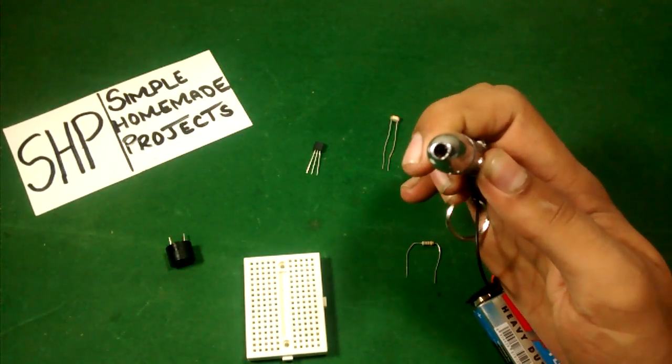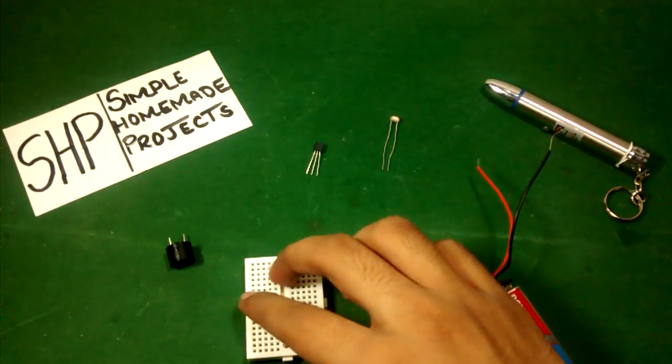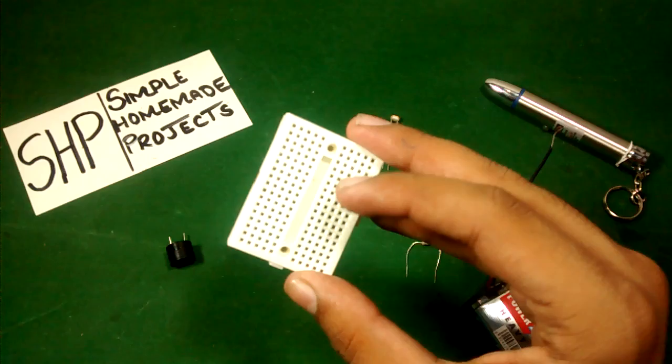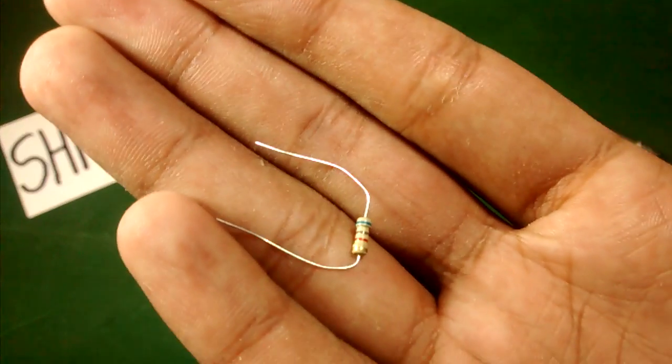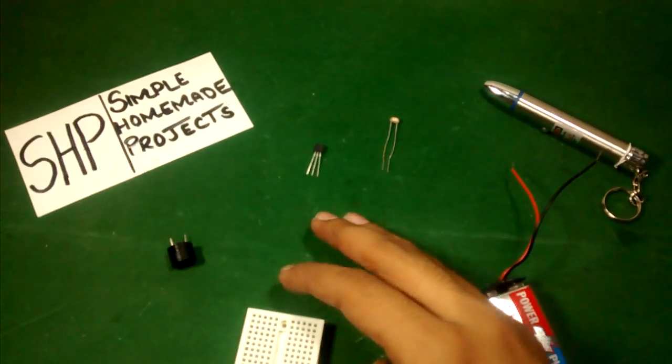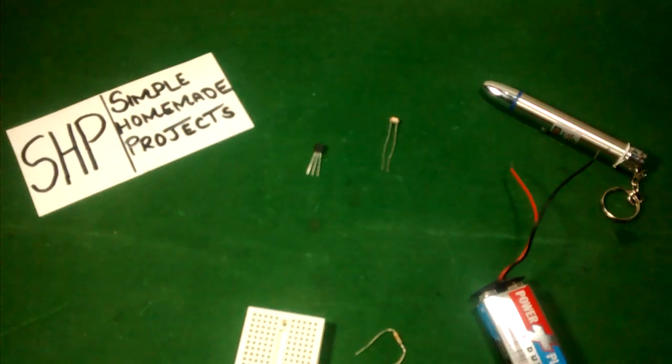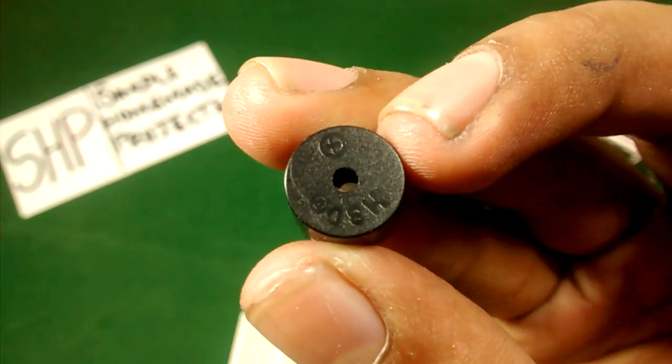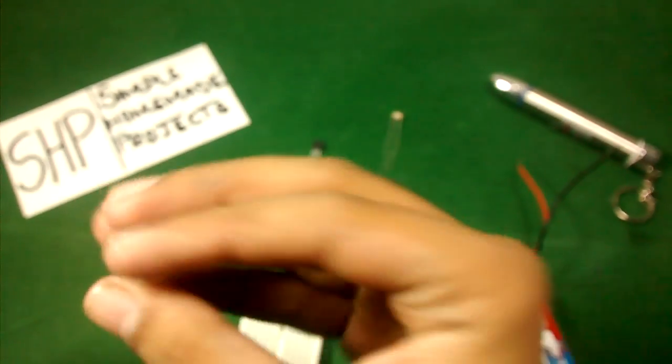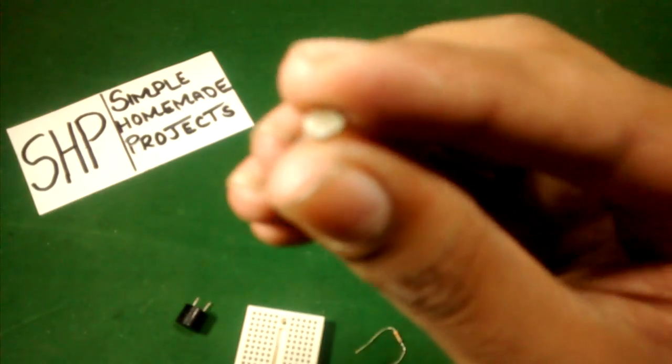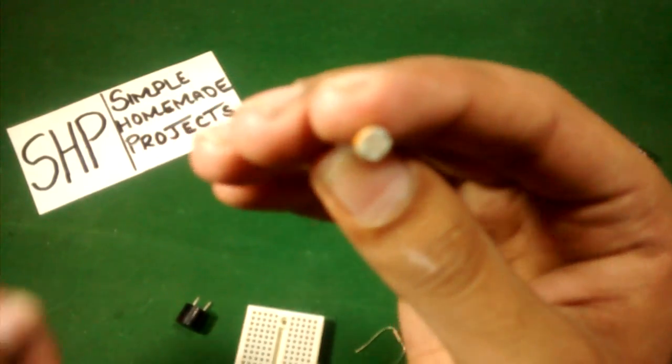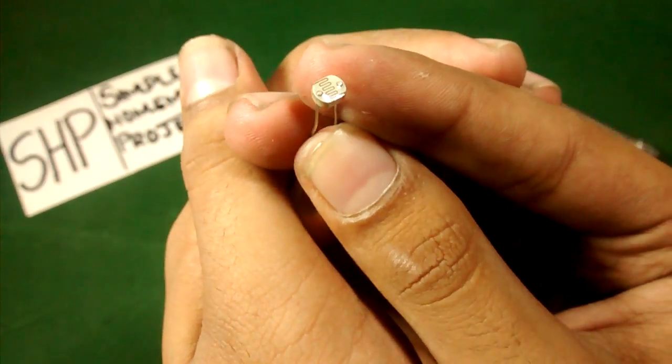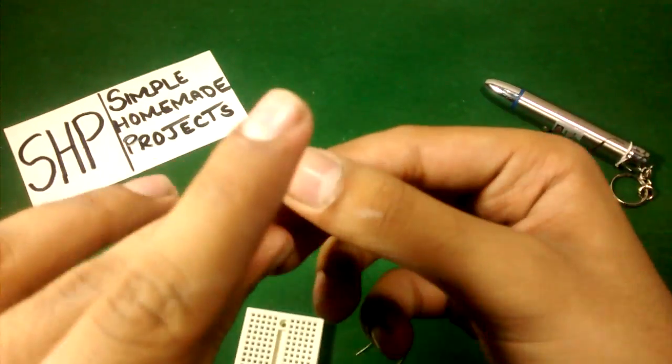mini breadboard, 6.8 kilo ohm resistor, small buzzer, LDR, and the 2N7000 transistor.